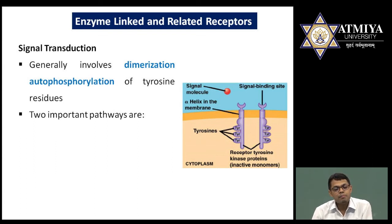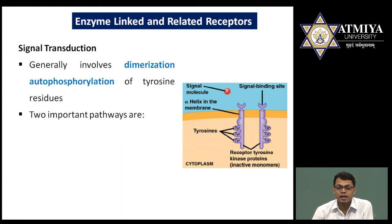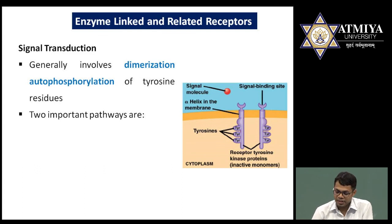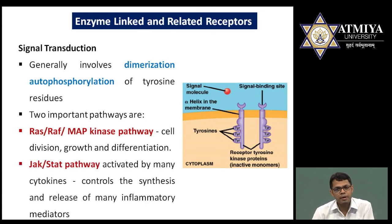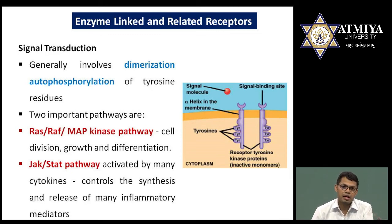For enzyme-linked receptor signal transduction, when a ligand binds, the receptors dimerize. After dimerization, they phosphorylate each other — auto-phosphorylation occurs. In the diagram, three tyrosine molecules are present in each receptor; they auto-phosphorylate each other and activate downstream pathways. Two famous pathways are the RAS-RAF or MAP kinase pathway, responsible for cell division, growth, and differentiation, and the JAK-STAT pathway, which is related to cytokines and inflammatory mediators and mediates immunological responses.